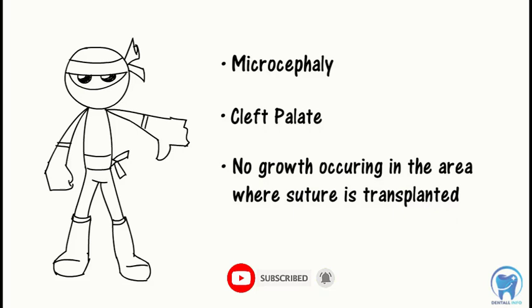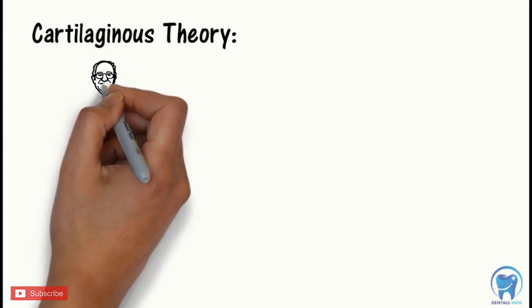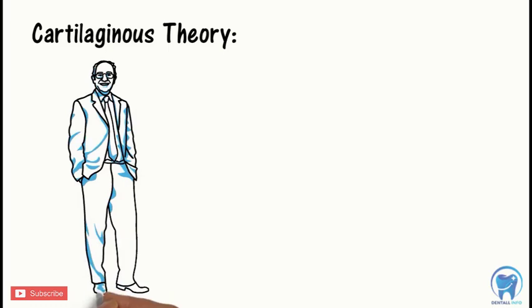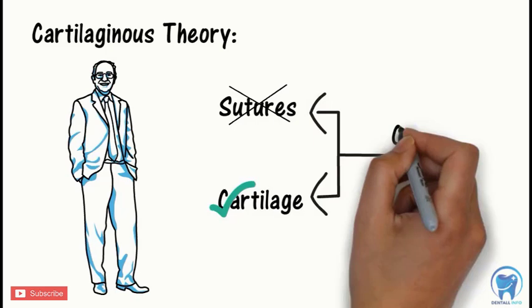These limitations led to the proposal of the next theory, which is the cartilaginous theory. This theory was proposed by James Scott in early 1950. According to Scott, the intrinsic growth controlling factors were not present in the sutures but were present primarily in the cartilage and periosteum. Sutures were only acting as secondary sites according to this theory. This led to the basis of the cartilaginous theory.